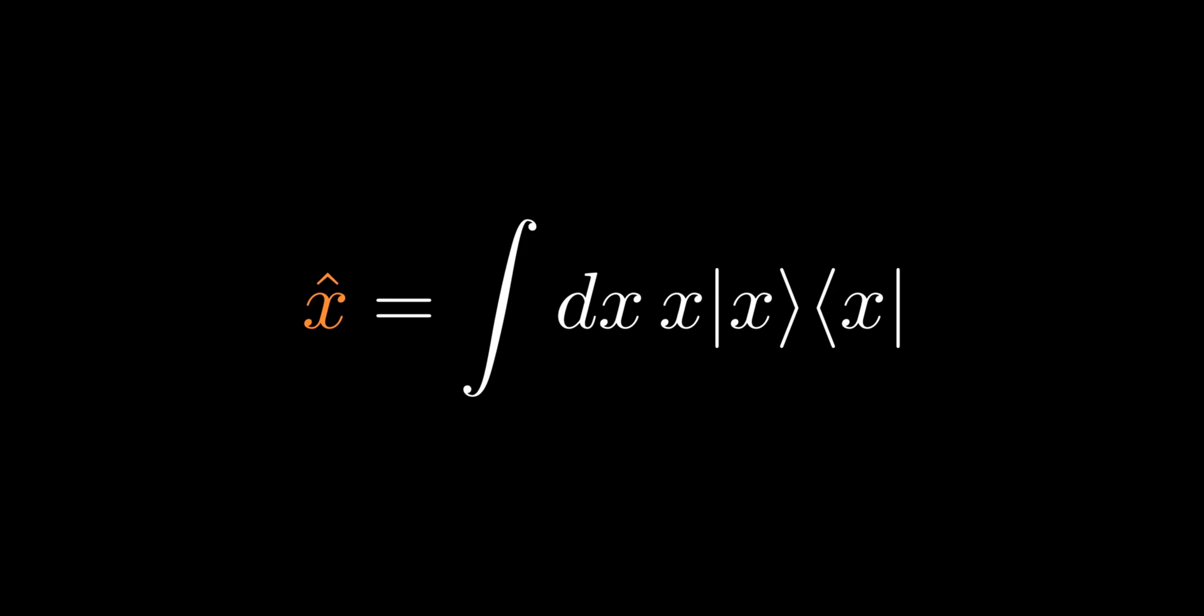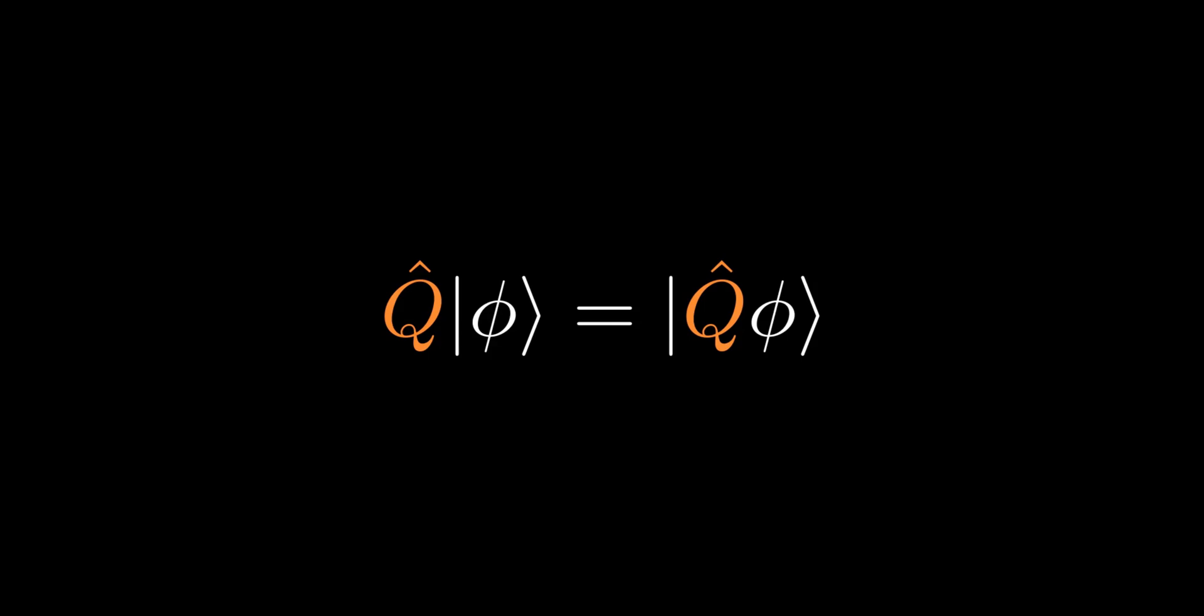We now take some time to develop the notation further. As the operator is linear, another ket is always generated after the application of the operator to the ket. We can name this new ket anything we like, but it is often useful to label the ket in a way such that we can tell what operator has been used to generate this new ket.